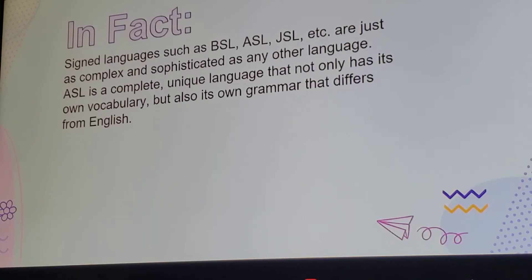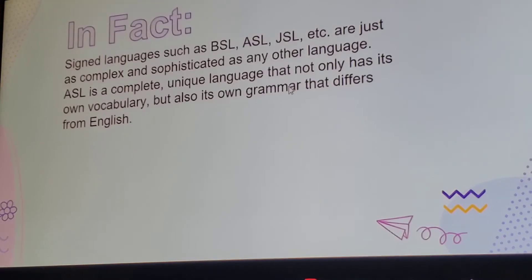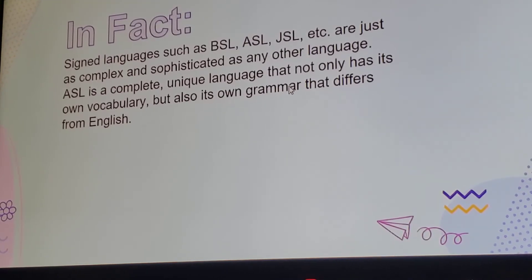In fact, sign languages such as British Sign Language, American Sign Language, and JSL — Japanese Sign Language — are just as complex and sophisticated as any other language. ASL is a complete language that has its own vocabulary and its own grammar that differs from English.